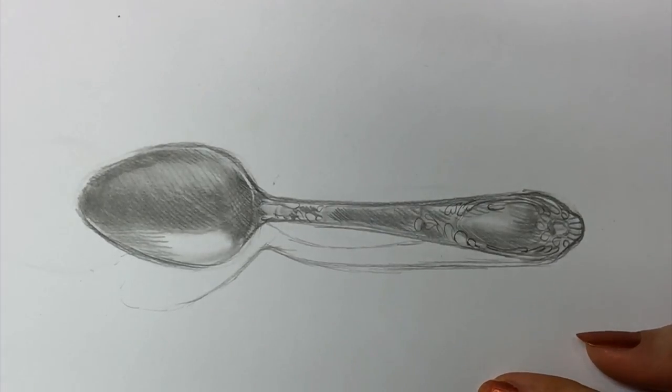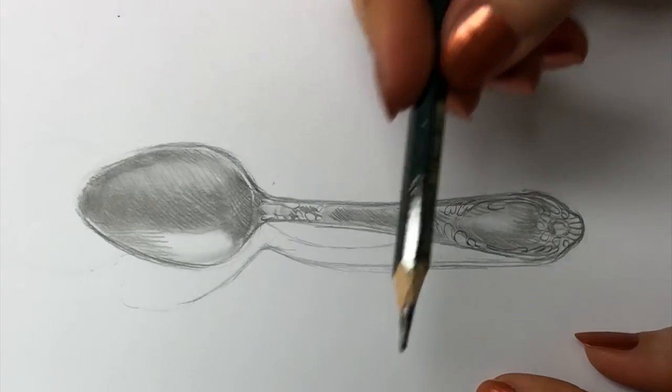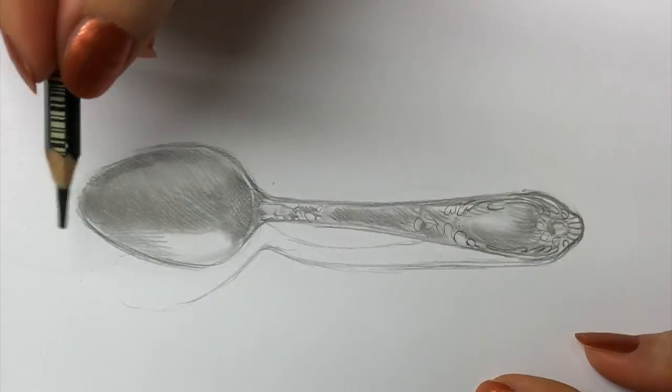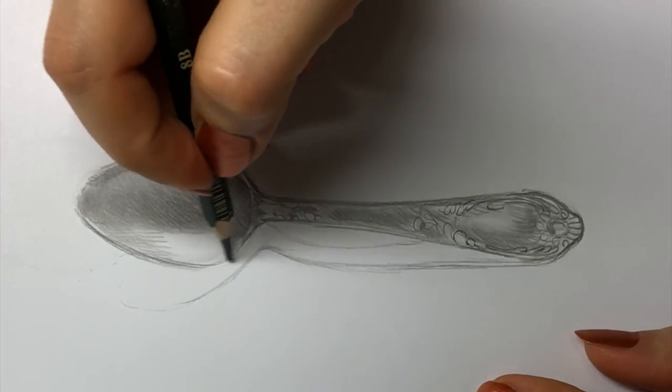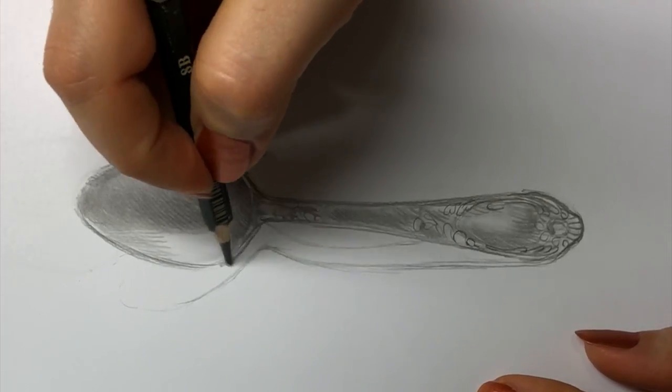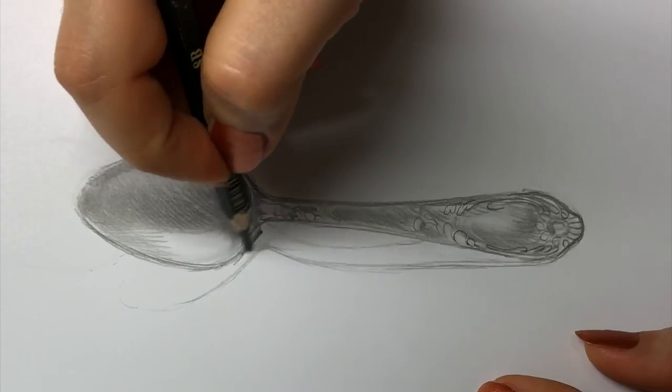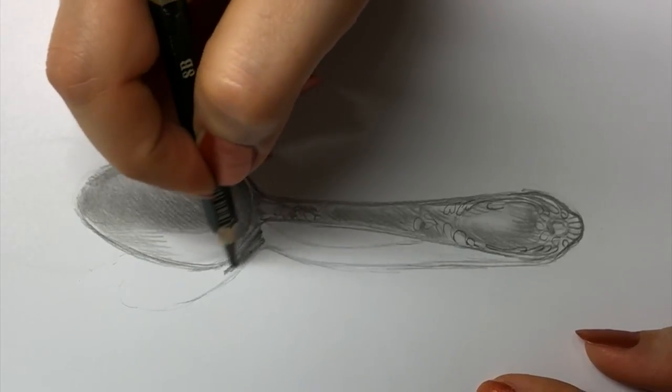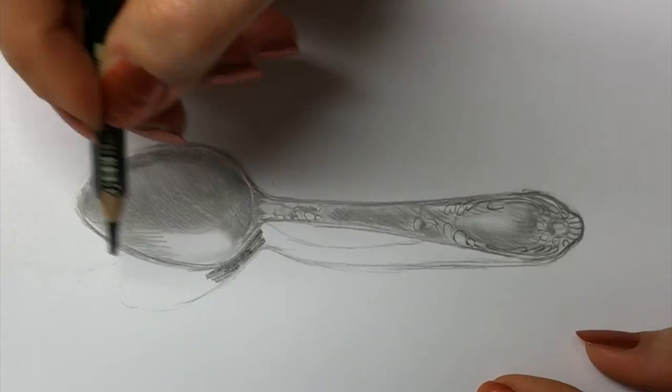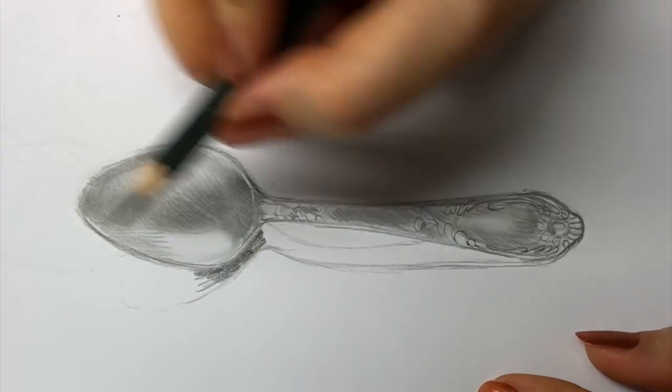And we can also, at this stage, mark our shadows as this is 8B. So we can create a shadow. Make sure that you are observing your own shadow. The one that you've got, if you are working on your own object, because you would get different variations.